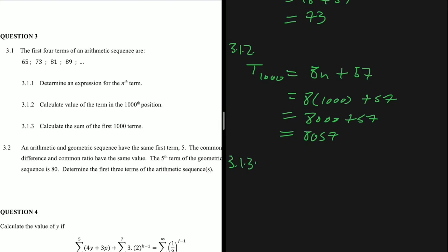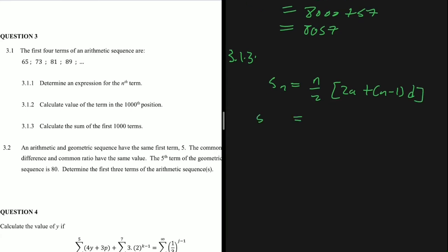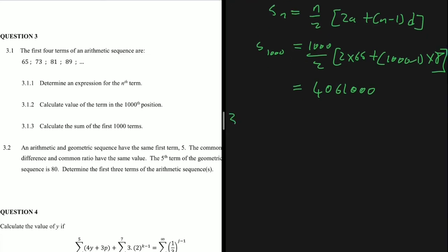Question 3.1.3 asks for the sum of the first 1000 terms. The sum formula is Sn = (n/2) × [2a + (n-1) × d]. So S1000 = (1000/2) × [2(65) + (1000-1) × 8]. Putting that into the calculator gives us 4,061,000.